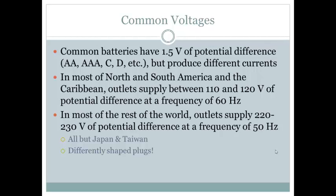Some common voltages of things you may be familiar with are batteries. All the batteries that you use in your house that aren't specified as a 9 volt or a 6 volt have a 1.5 voltage. So AA batteries, AAA, Cs, Ds, they all have 1.5 volts of potential difference. But they produce different currents. That's why they have the different sizes.